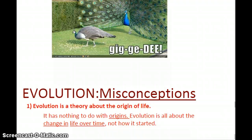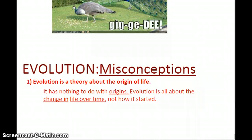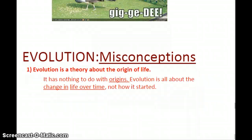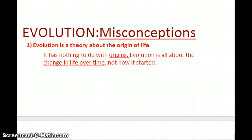Now that we've reviewed some of the big concepts of evolution, let's look at some common misconceptions. When you understand that evolution is basically just a matter of genetic change over time, it becomes a lot simpler than many people think. One big misconception is that evolution is a theory about the origins of life. Evolution has nothing to do with origins — studying the origins of life is a completely different field from evolutionary biology. Evolution is all about change in life over time; it's not about how life started.